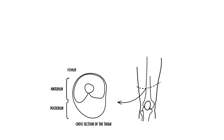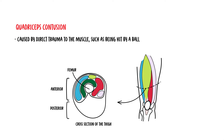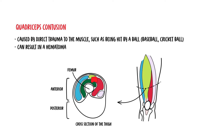In terms of quadriceps contusion, this is caused by direct trauma to the muscle, such as being hit by a ball — for example, a baseball or a cricket ball. The impact damages blood vessels and muscle tissue, which can result in a hematoma, which is a collection of blood outside the blood vessel.